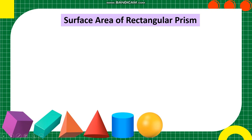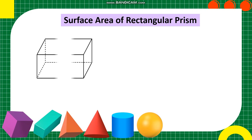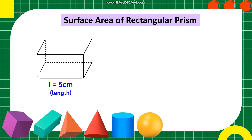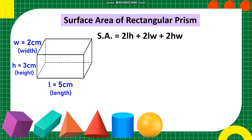Surface area of rectangular prism. We have here the figure of a rectangular prism whose length measures 5 centimeters, width measures 2 centimeters, and height measures 3 centimeters. To solve for the surface area of the rectangular prism, we have the formula: Surface area equals 2 times length times height, plus 2 times length times width, plus 2 times height times width.